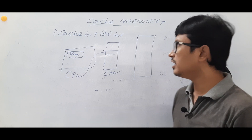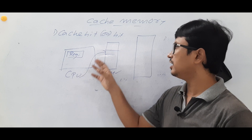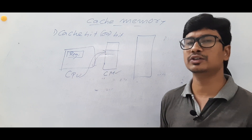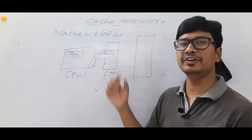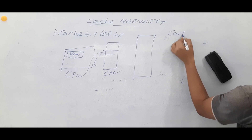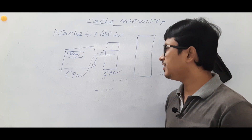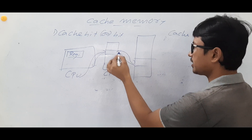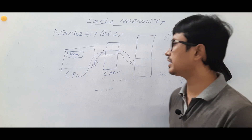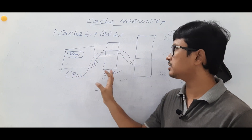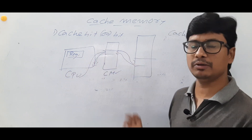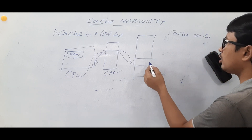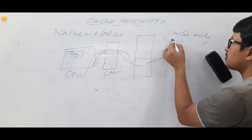If the instruction the CPU is searching for is not available in the cache memory, we call it a cache miss. Then it will try to fetch from the main memory. If available in the main memory, it will be brought into the cache memory and the CPU will execute it. If it is not available in the main memory either, it will be fetched from secondary memory.